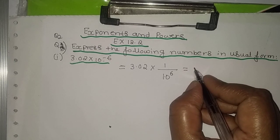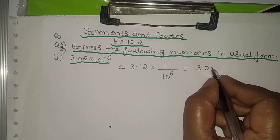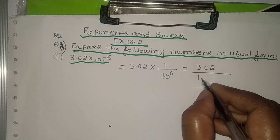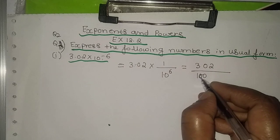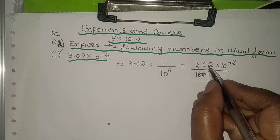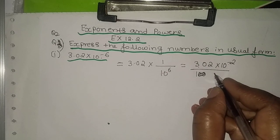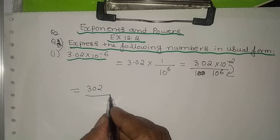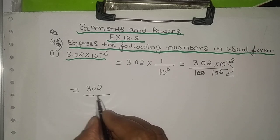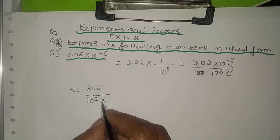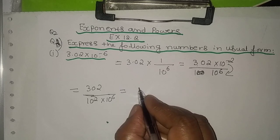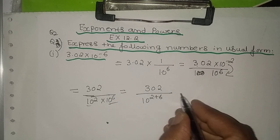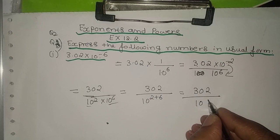We can write it as 3.02 divided by 10 to the power 6. Now 3.02 can be written as 10 to the power minus 2 divided by 10 to the power 6. Bringing 3.02 to the denominator means it will be 10 power 2, then into 10 power 6 we are having. So this gives us 3.02 by 10 to the power 8.